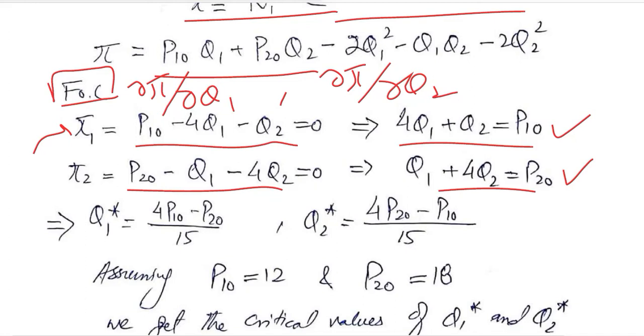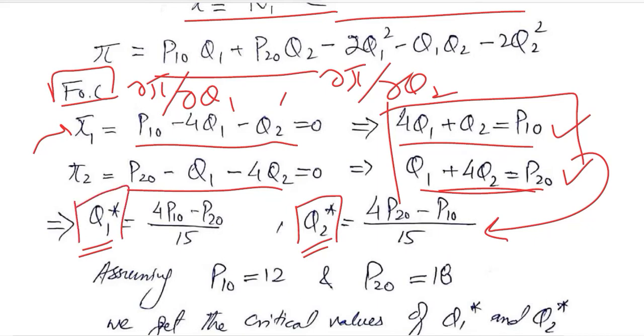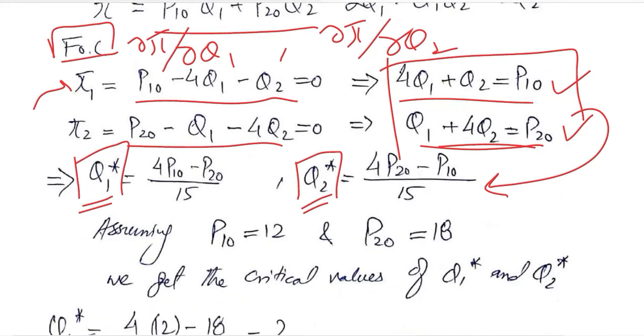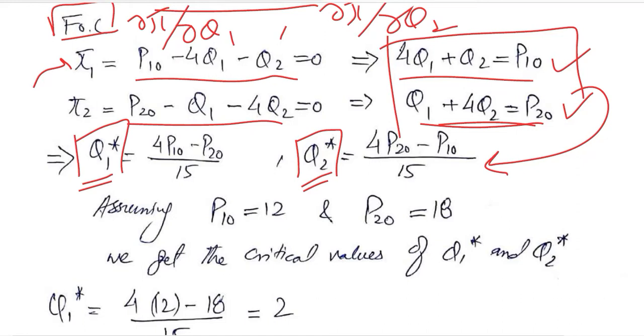So solving these equations simultaneously, because we know these are simultaneous equations, we get the value of Q₁ and Q₂. These are the critical values of Q₁ and Q₂. They are not yet in numerical form.